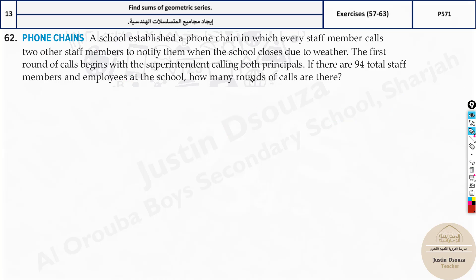Next: a school phone chain where every staff member calls two others when school closes due to weather. The superintendent starts by calling both principals. If there are 94 total staff, how many rounds of calls are needed? a1 equals 1, r equals 2. We don't know n — we need to find it. Since total staff is 94, this is essentially S_n greater than or equal to 94.